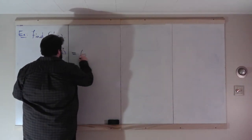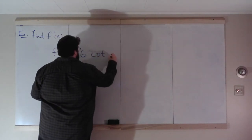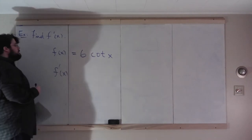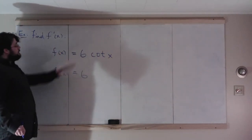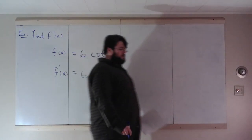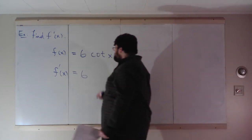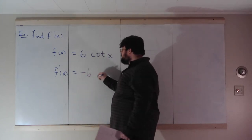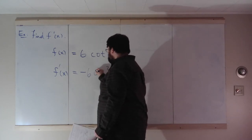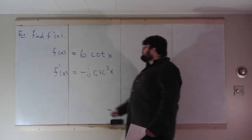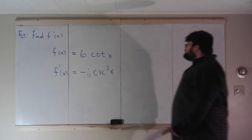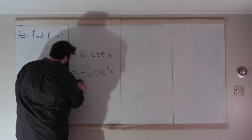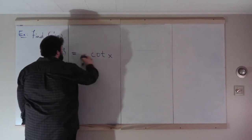Let's do f(x) equals 6 cotangent of x. The 6 just carries along by the constant multiple rule. Then derivative of cotangent of x: the last trig rule tells us the derivative of cotangent is negative cosecant squared of x. So the derivative of 6 cotangent x is negative 6 cosecant squared x.